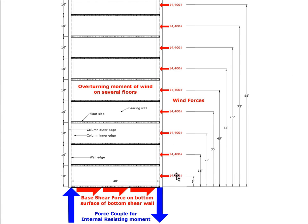If we take this 14,400 pounds, it's centered halfway up that wall and its lever arm is half the height of the floor — in other words, 5 feet. The next 14,400 pounds is 15 feet up, so 15 feet is its lever arm in terms of creating the overturning moment of wind. We have another one at 25 feet, centered on the third floor. We would have to add all of these up, and we're going to do that in our spreadsheet.